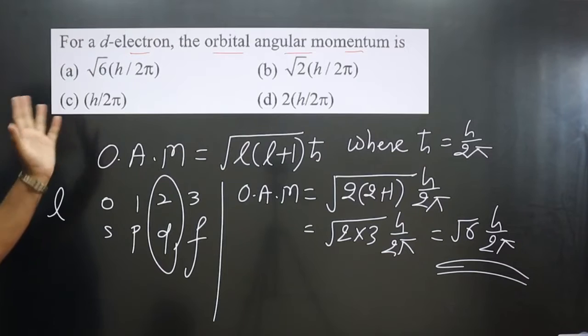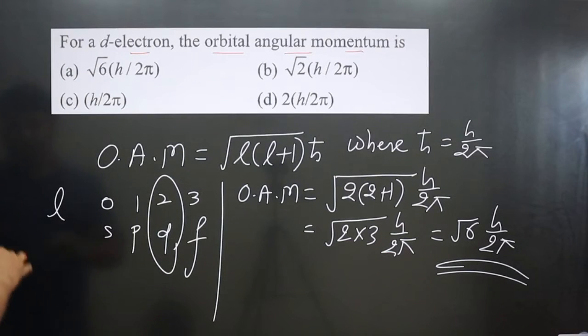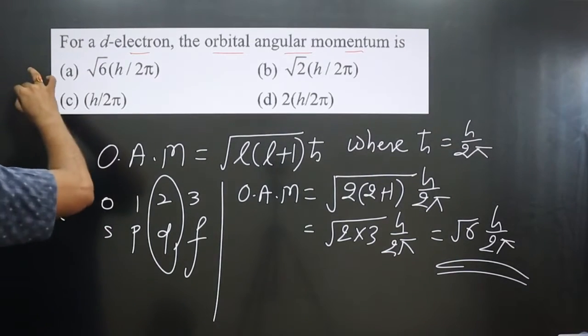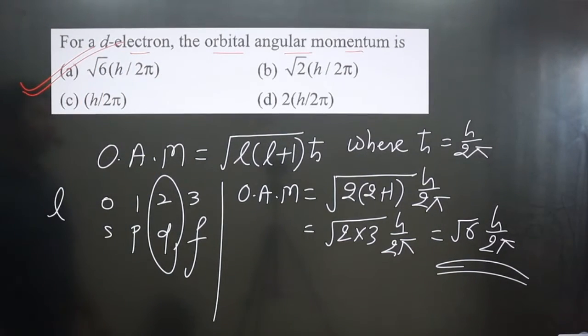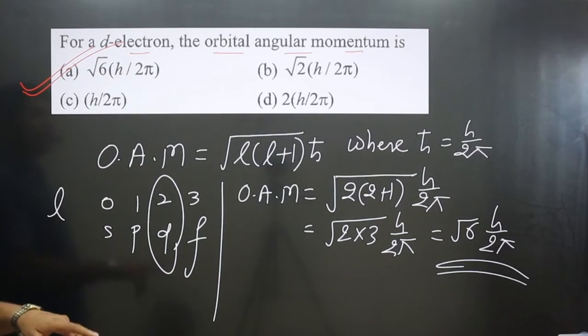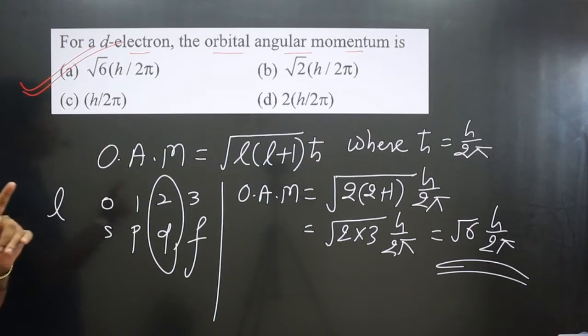The answer is under root 6 times h upon 2π, which is the orbital angular momentum for the d electron. Option A matches this result. If you like this video, please share and subscribe to the channel.